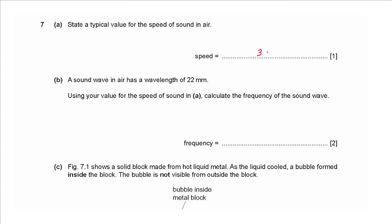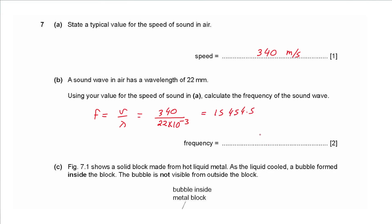Question 7a: state a typical value for the speed of sound in air — anything from 300 to 360 m/s; the most common value is 340 m/s. Part b: a sound wave in air has a wavelength of 22 mm. Calculate the frequency: frequency equals speed divided by wavelength. Converting 22 mm to 22 × 10⁻³ m, we get 340 ÷ 0.022 = 15 454.5 Hz, approximately 15 000 Hz.